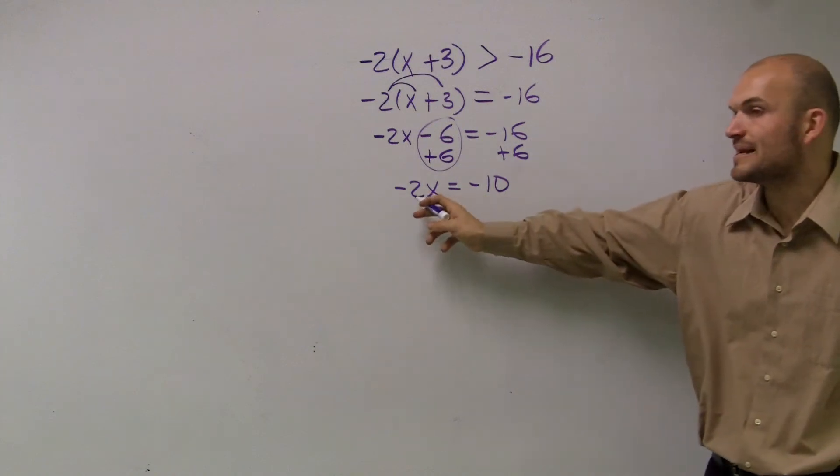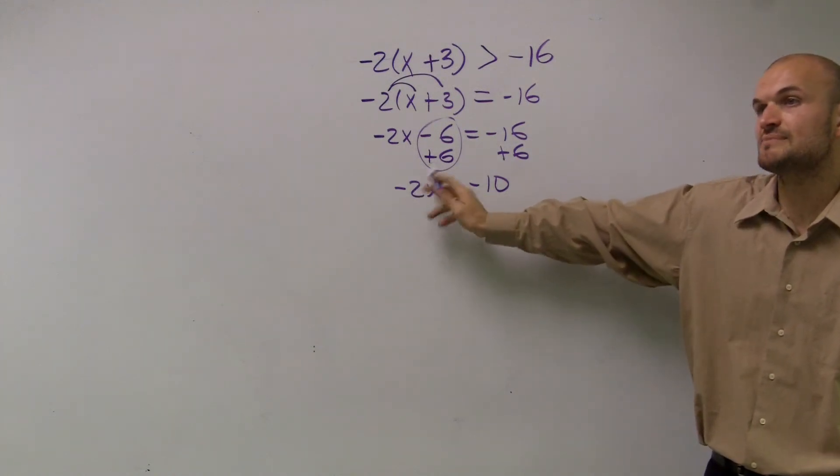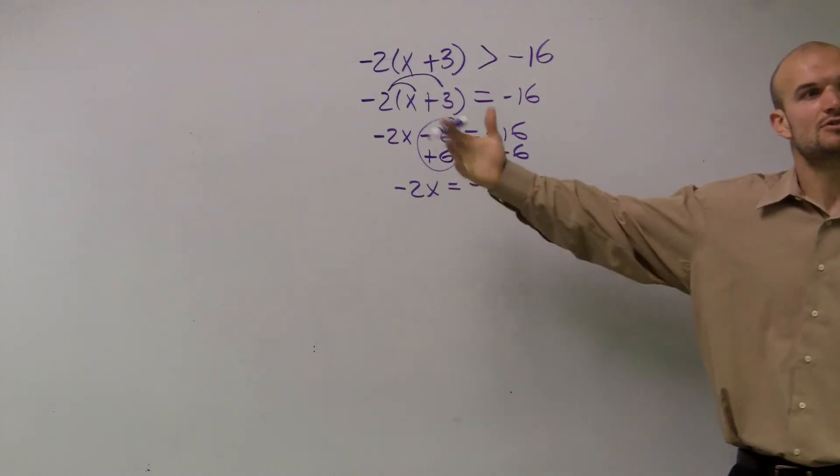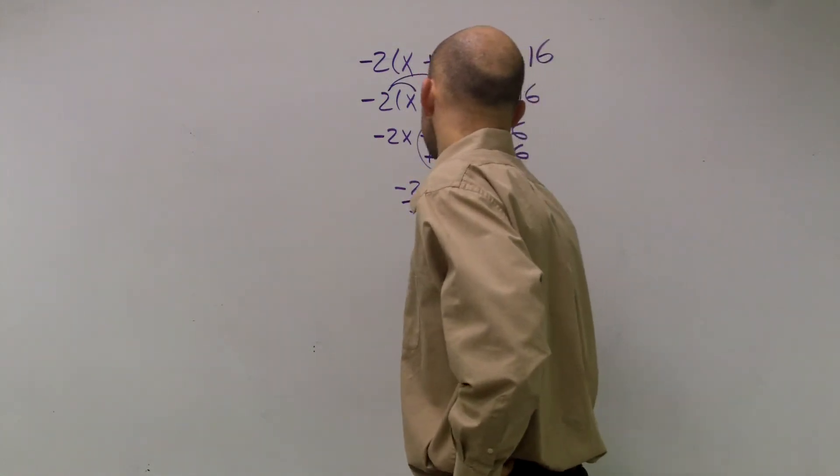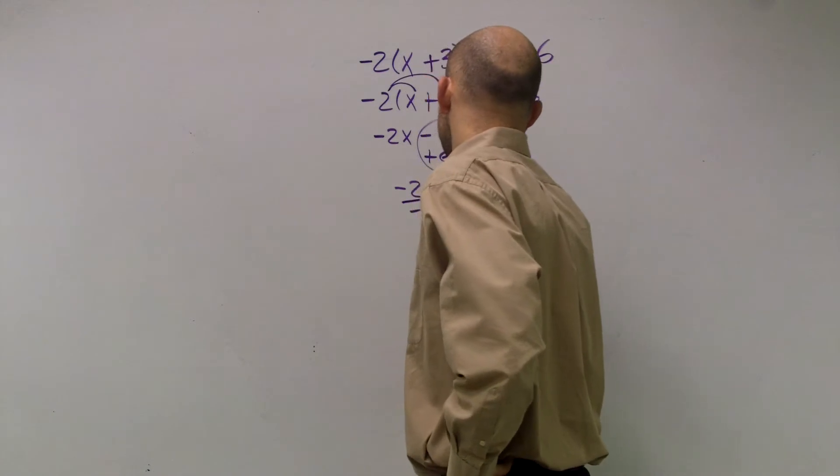That cancels to 0, giving us negative 10. Now, negative 2 is multiplying by x, so to undo multiplication, we divide. Therefore, x equals positive 5.